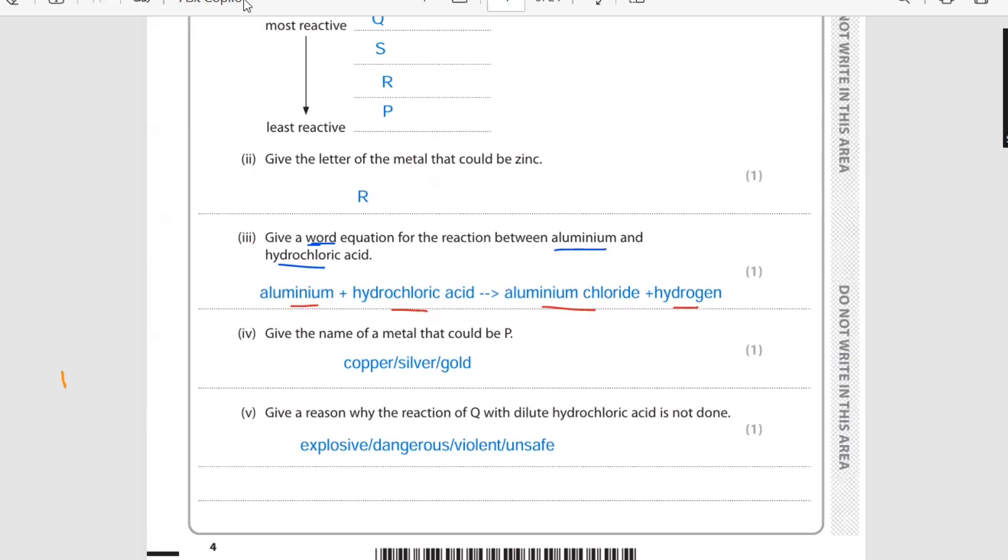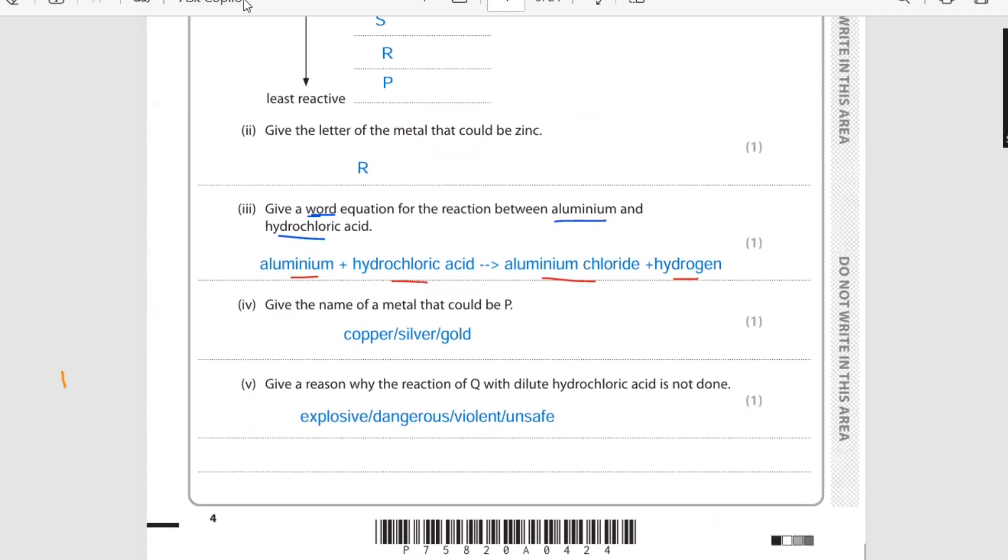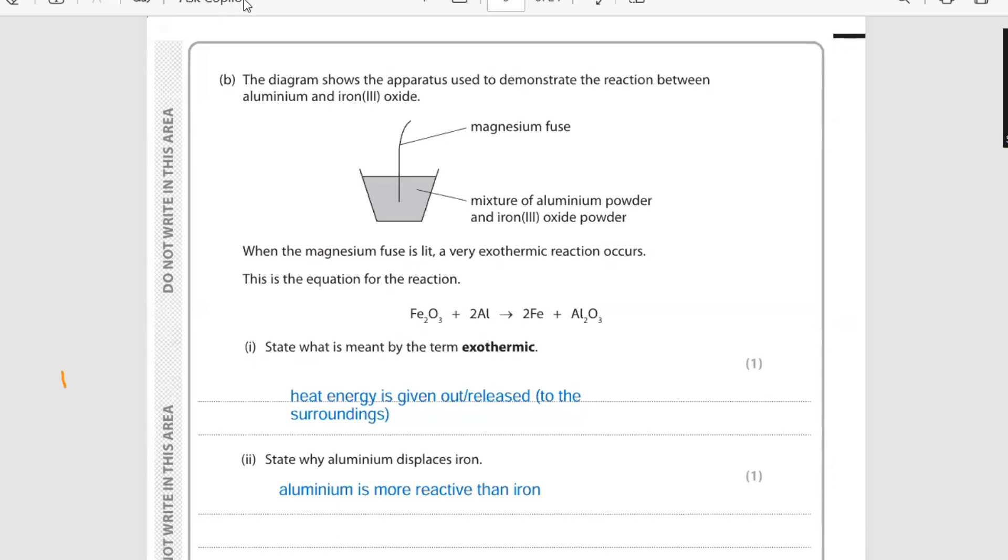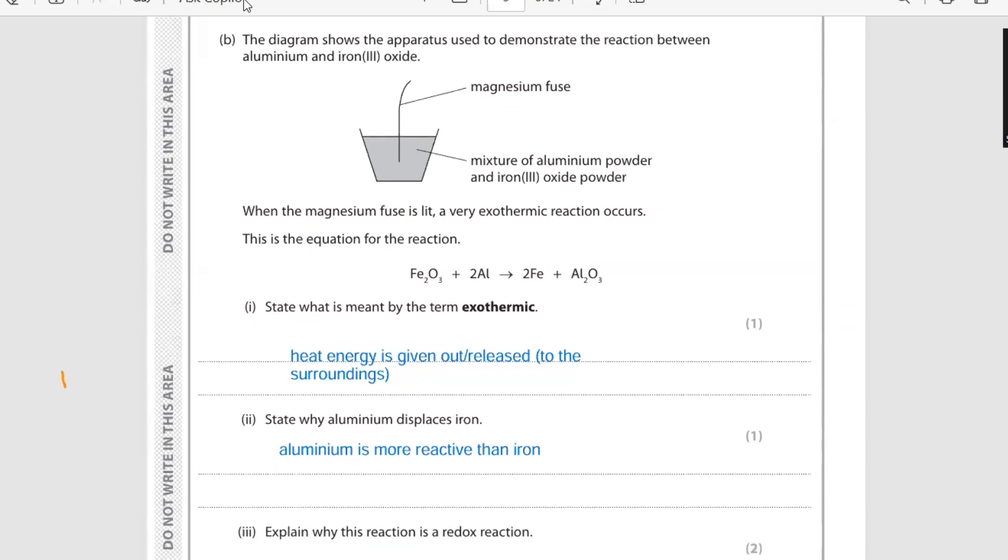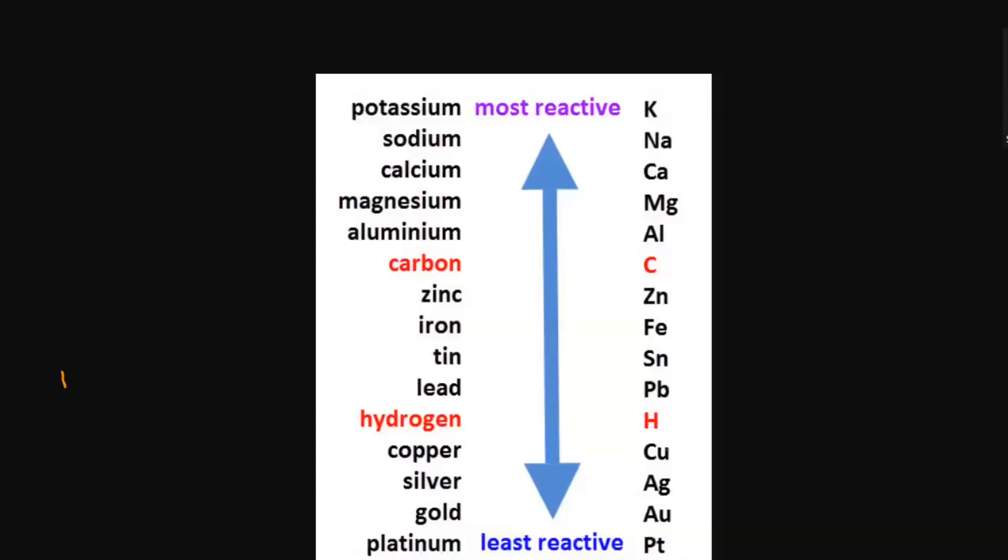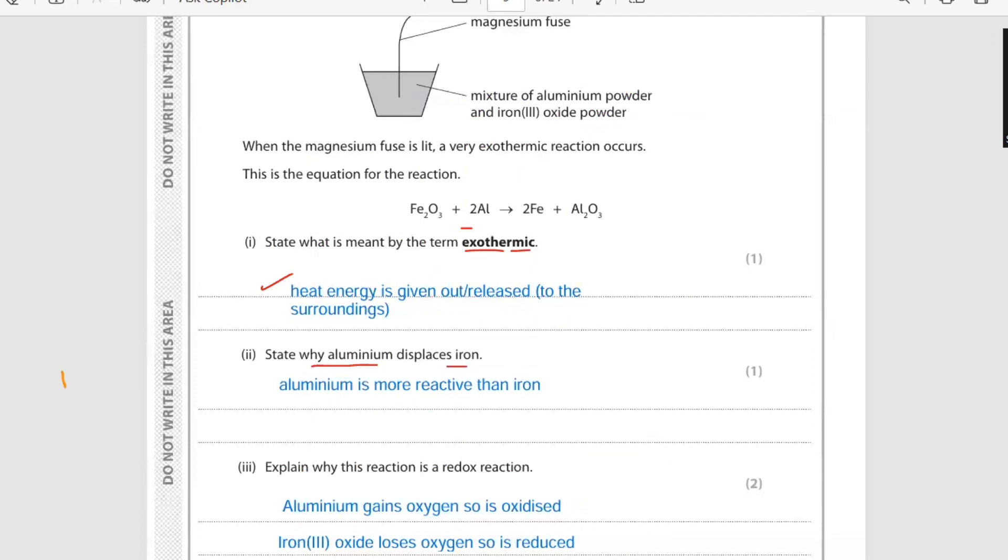Give a reason why the reaction of Q with dilute hydrochloric acid is not done - this reaction could be explosive, dangerous, violent, or unsafe. The diagram shows the apparatus used to demonstrate the reaction between aluminium and iron(III) oxide. When the magnesium fuse is lit, a very exothermic reaction occurs. This is the equation for the reaction. What is meant by the term exothermic? Exo means out, thermic means thermal energy - any heat energy. In this reaction, heat energy is given out or released to the surroundings. State why aluminium displaces iron - because aluminium is more reactive than iron. We can see this in the reactivity series also. Aluminium is more reactive than iron. As you know, this is a displacement reaction.